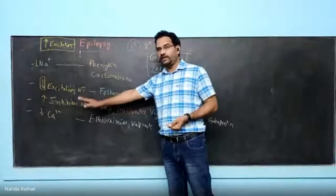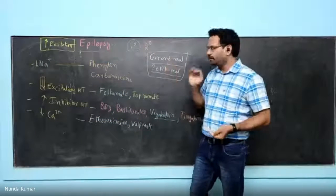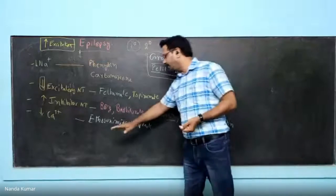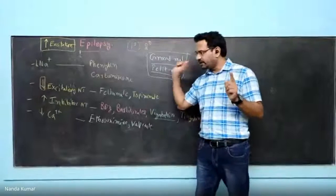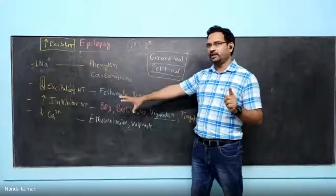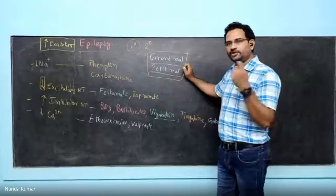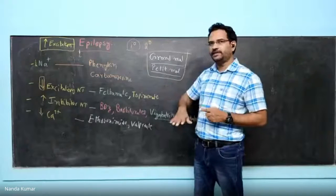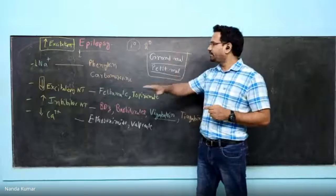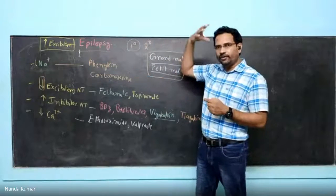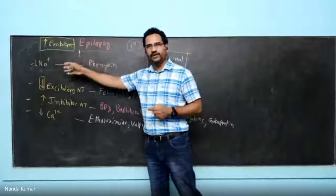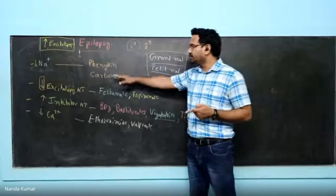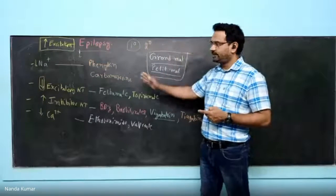Petit mal epilepsy is due to calcium channel dysfunction, so it is treated specifically by ethosuximide and valproate. Using any other drug worsens the condition. Similarly, partial seizures are treated by phenytoin and carbamazepine because a focal neuronal injury causes sodium channelopathy. These sodium channel blockers should be used only for partial seizures — you cannot use them for generalized seizures like grand mal or petit mal, as that will worsen the condition.